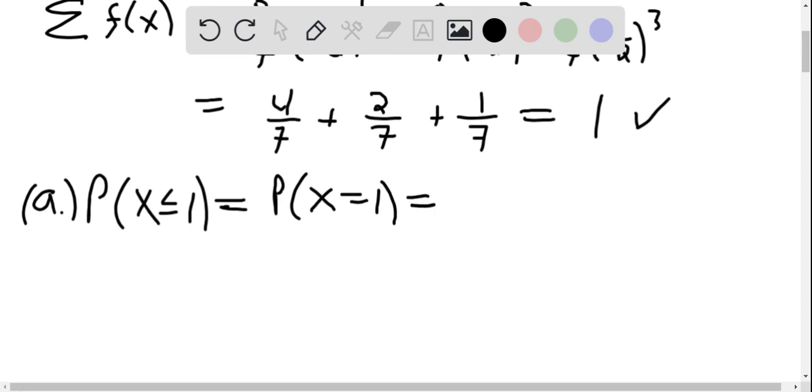And the probability when x is 1 is plug in 1 for our f of x. And so this is 8 7ths times 1 half to the first, which is 4 7ths.